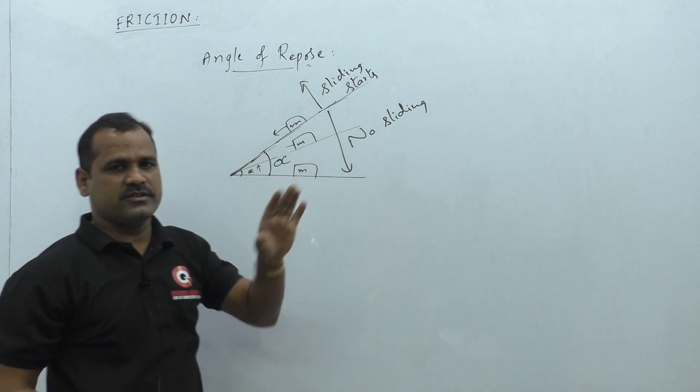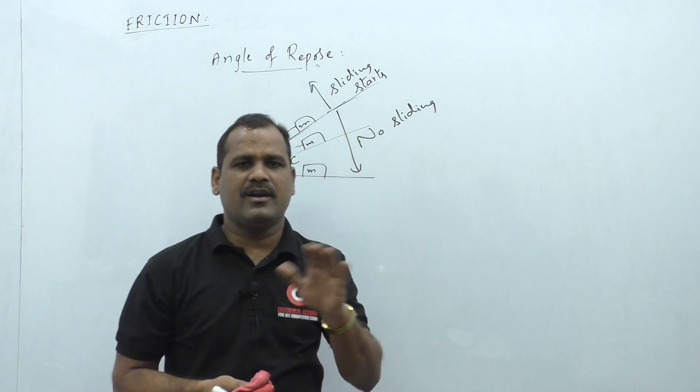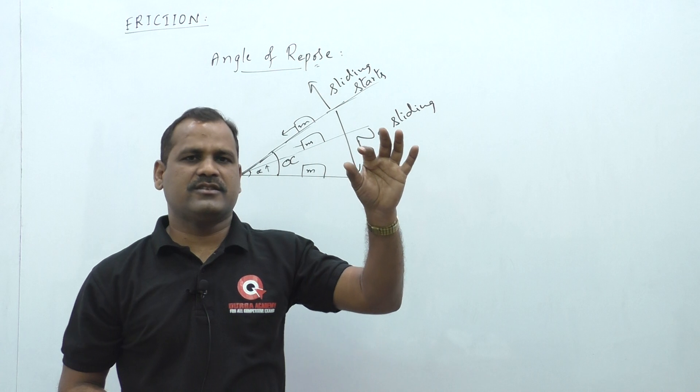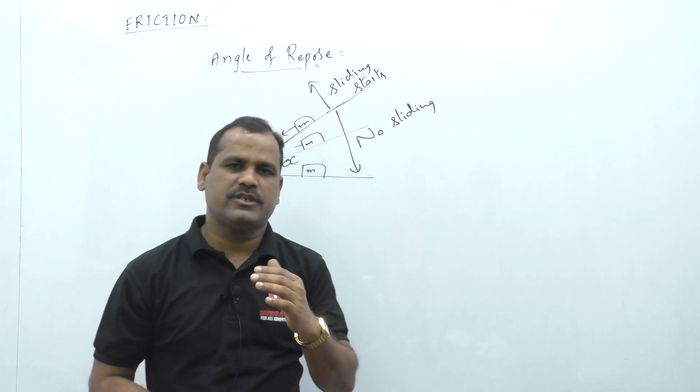So, the angle of repose is defined like this. This is the angle between the inclined plane and horizontal such that the object on the inclined plane just begins to slide down. This is the angle of repose definition.